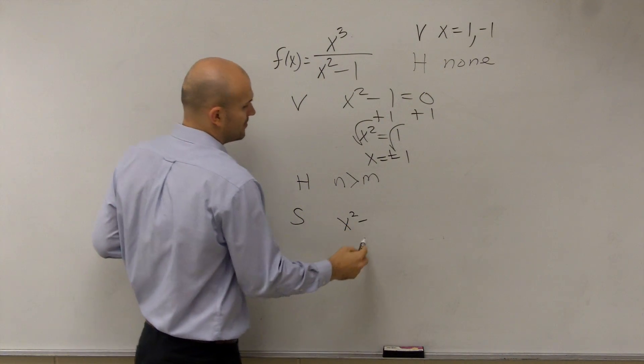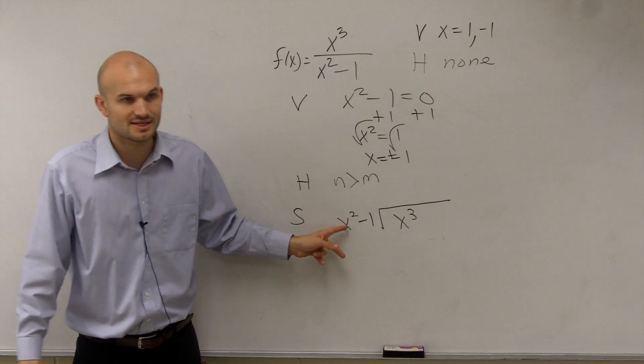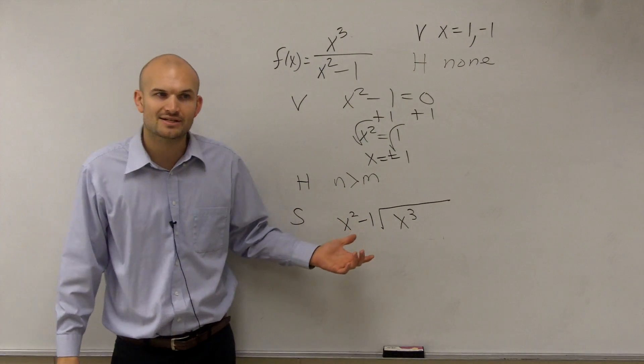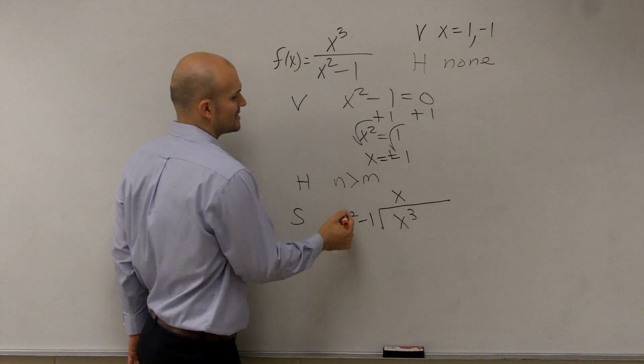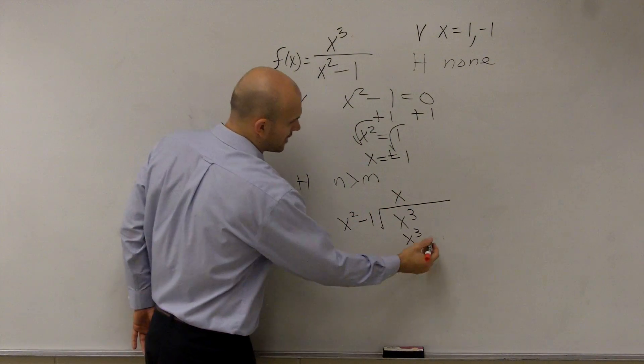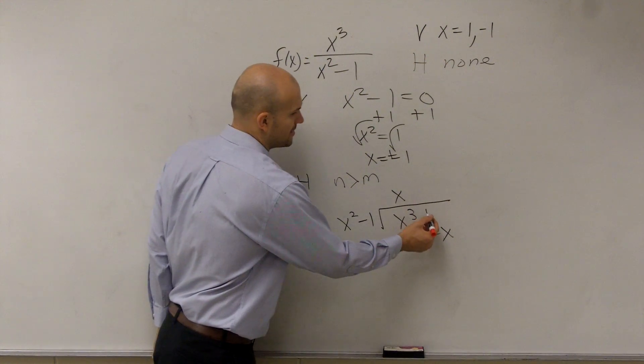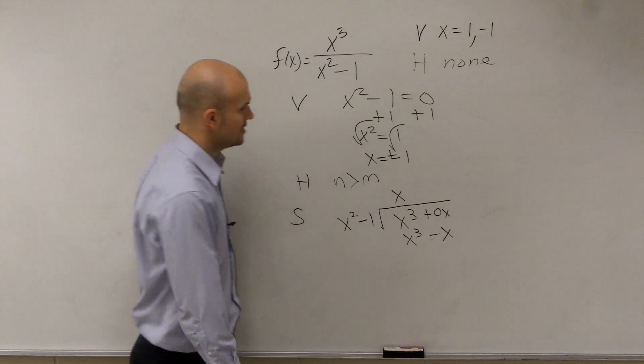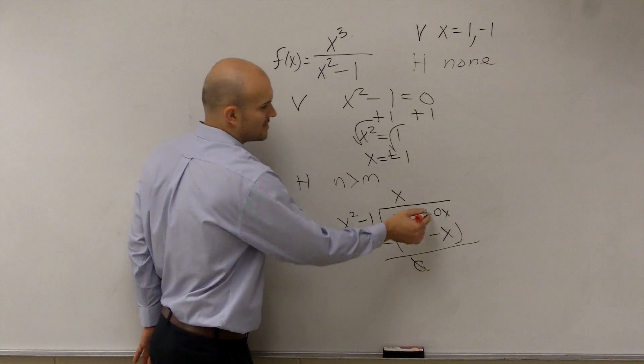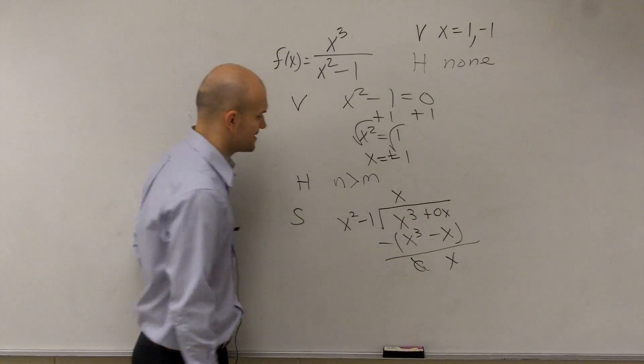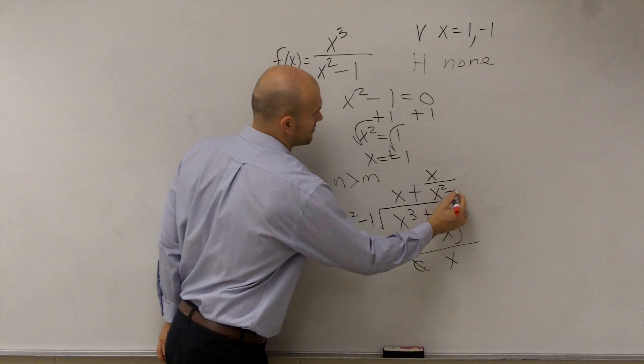So I could say x squared minus 1 goes into x cubed. You can't use synthetic division because this is a quadratic. You can only use it when it's a linear factor, synthetic division. So I go x squared goes into x cubed, x times, x times x squared is x cubed, x times negative 1 is negative x. And then, so this would be a plus a zero x. So then you put in parentheses, and you subtract, x cubed minus x cubed is 0, at 0x minus a negative is going to be a positive x. However, does x squared go into x? No, so we write it as plus x divided by x squared minus 1.